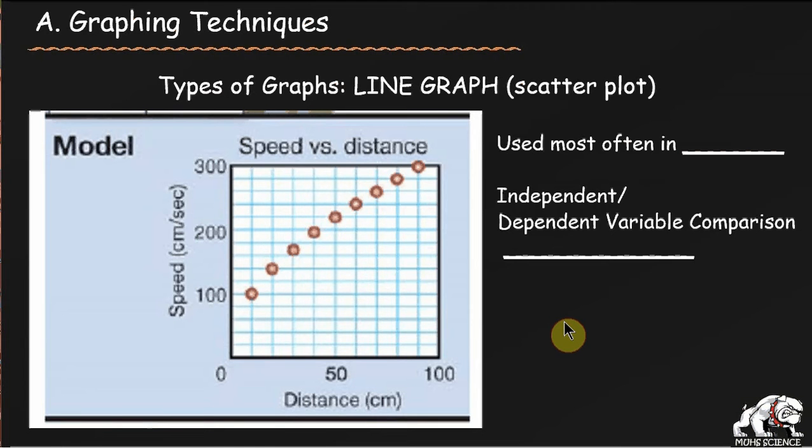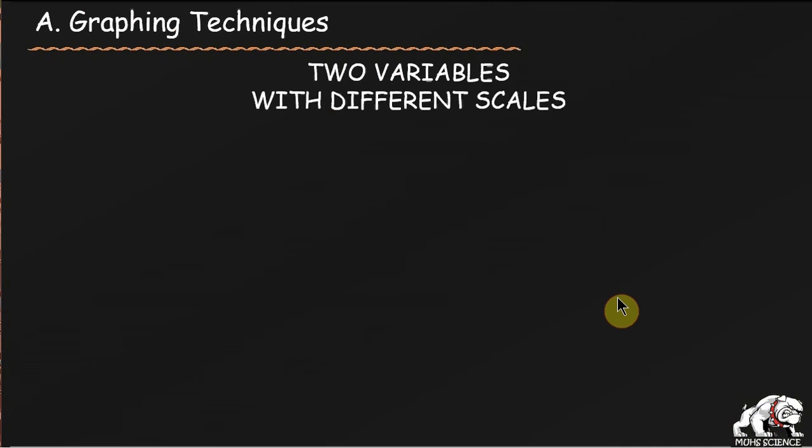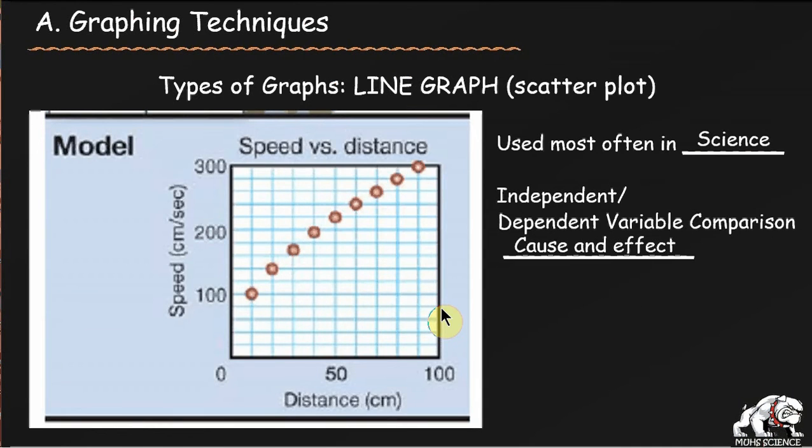Types of line graphs. We're going to use these most often in science. We have an independent and a dependent variable comparison that can show some cause and effect or at least what we might call correlations. The dependent variable goes on the x-axis. This is the thing that you're changing or the thing that you're recording changing and then you're seeing the responding variable. What's happening here? The dependent variable. So it's dependent on the independent variable. So independent variable down here and the dependent variable up here. If you ever have time, time goes on the x-axis all the time because it's the ultimate independent variable. You can't change time.